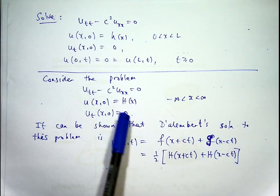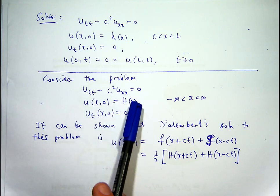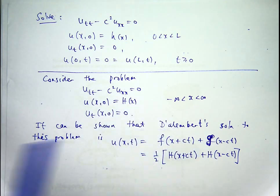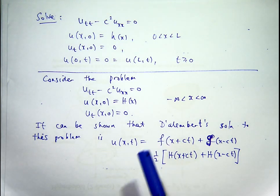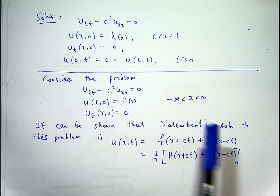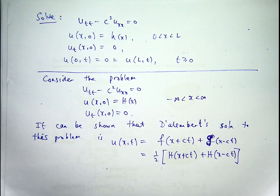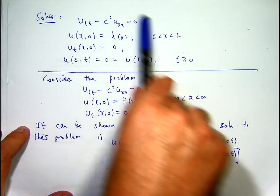So the first condition, it'll be h equals f plus g. The second condition will be something like cf' of x minus cg' of x equals 0. And if you differentiate the one involving h of x, then you can actually go through and determine f in terms of big H and g in terms of big H. All right. So how can we use this to actually solve the original problem?